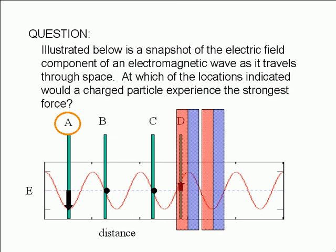The distance spanned by one of these repeating patterns is called the wavelength. The wavelength is usually represented by the Greek letter lambda.